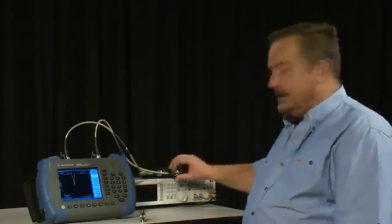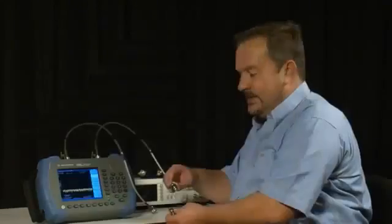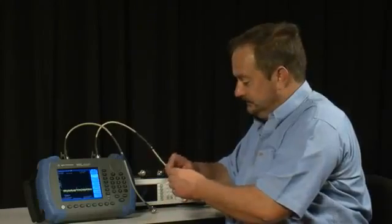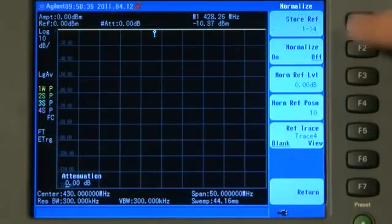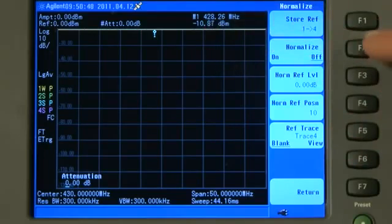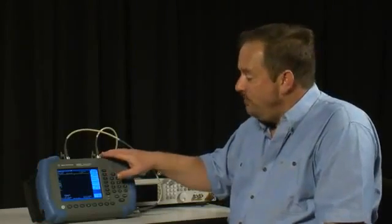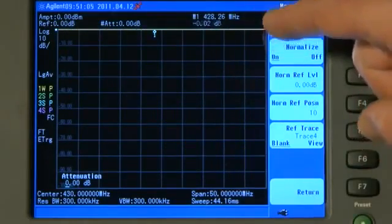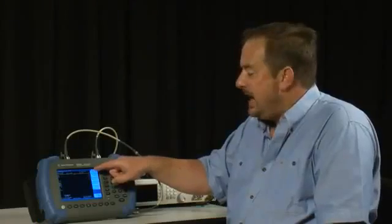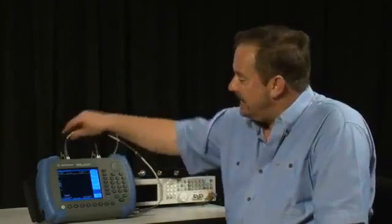So I will disconnect the filter and I will connect the through adapter. And if we press the Mesh key, and then normalize, store ref 1 to 4, that saves the trace into the memory, and then press normalize on. The instrument has now normalized this trace. The trace is now at exactly 0 dB, right the way across the top of the screen, and is removing any losses or errors from the cables and adapters and the rest of the measurement setup.